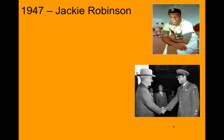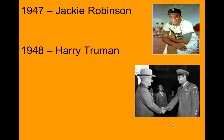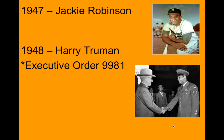After World War II, we saw a couple things transpire. In 1947, Jackie Robinson breaks the color barrier and begins playing for the Brooklyn Dodgers. In 1948, we saw President Harry Truman pass Executive Order 9981, which was the desegregation of the armed forces. Now blacks and whites would fight side by side, the Korean War being the first of these conflicts that they fought together.